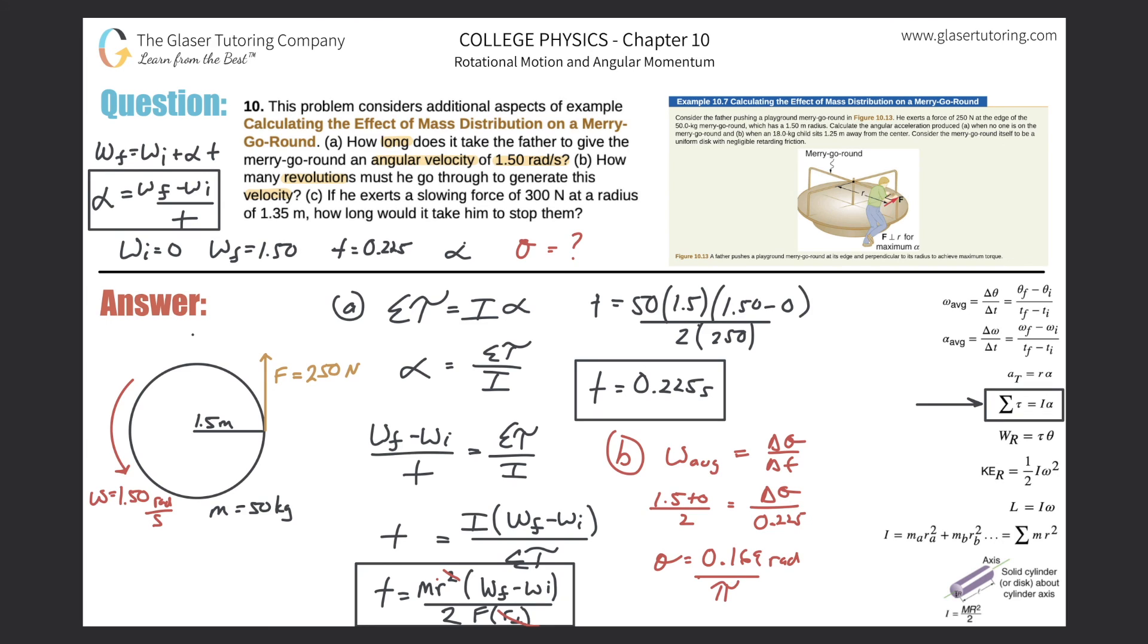And now that will get us, so it's only 0.0269, 269 revolutions. That is the final answer. That's how many revolutions it goes through for letter B.